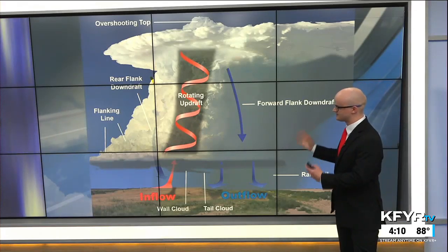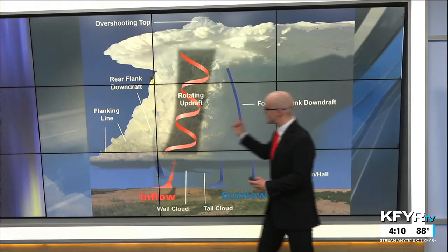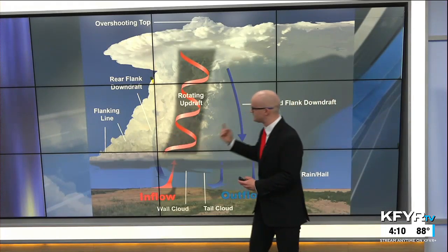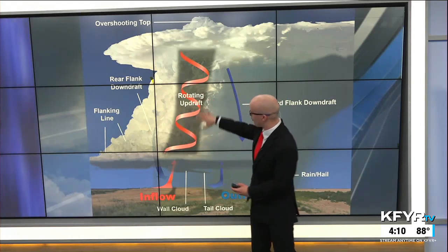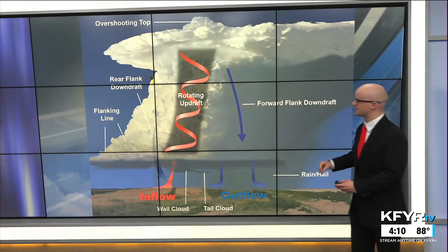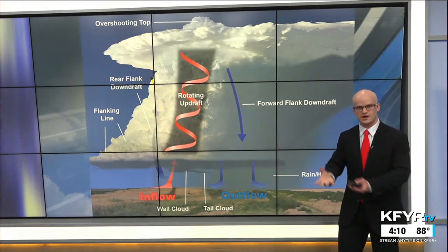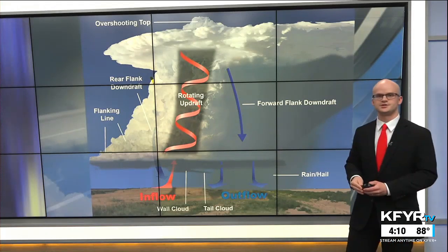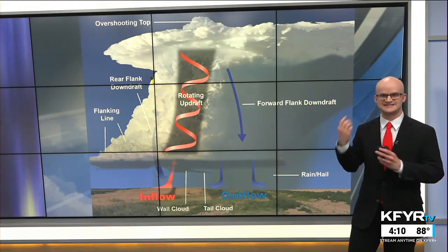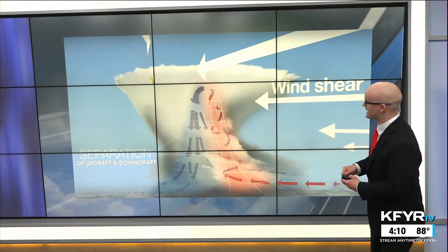The defining characteristic of supercells is that they have a rotating updraft. Within the core of these big cumulonimbus clouds, the updraft — the rising warm air within the thunderstorm — is rotating. That sustains the storm and allows for severe weather to happen.